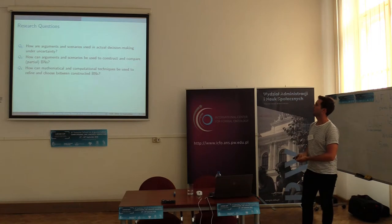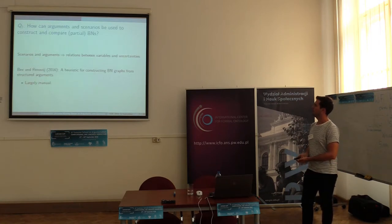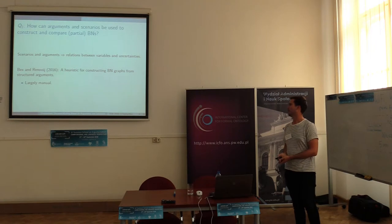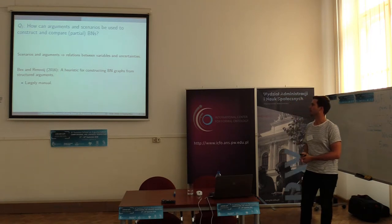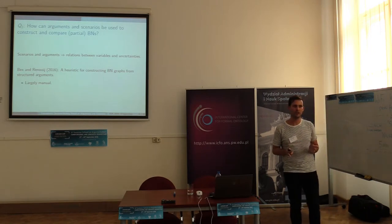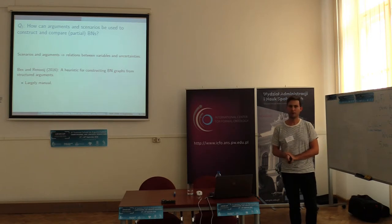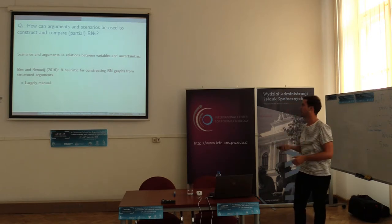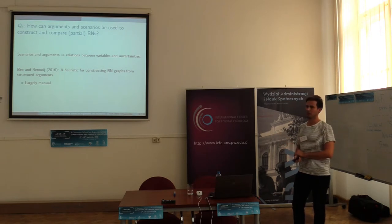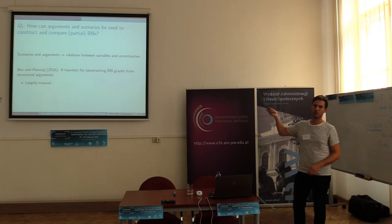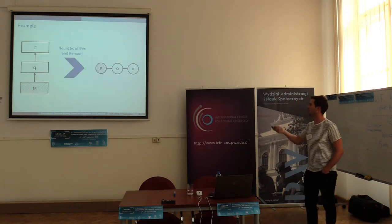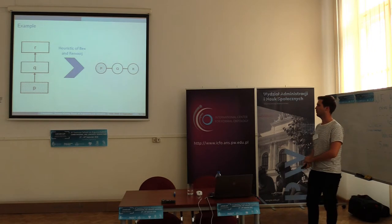I will now go into detail on question two. Two of my supervisors have actually focused on this question before. In general, an argumentation or scenario-based analysis already conveys relationships about variables and dependencies in the domain. My supervisor proposed a general heuristic for constructing just the graph structure of the Bayesian network, but it is still largely manual, so it's not very useful in practice yet. I'll illustrate what I mean by largely manual with a simple example.